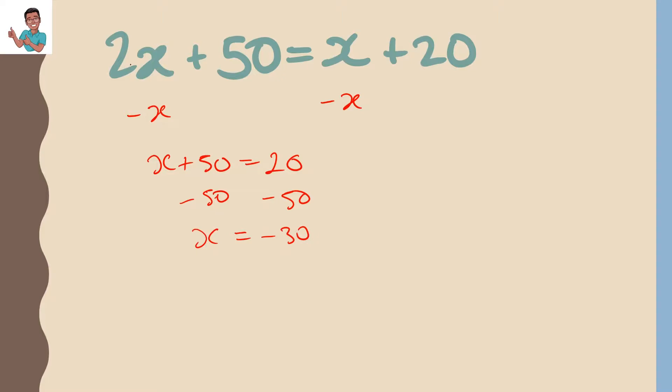We can check if our answer is right by substituting it back in. So 2 times minus 30 plus 50 equals minus 30 plus 20. 2 times minus 30 is minus 60. And minus 30 plus 20 is minus 10. We can simplify this to minus 10. So indeed, we are correct.